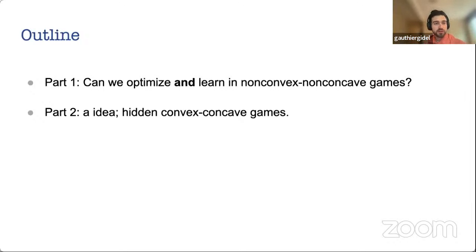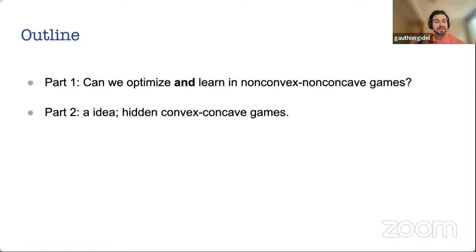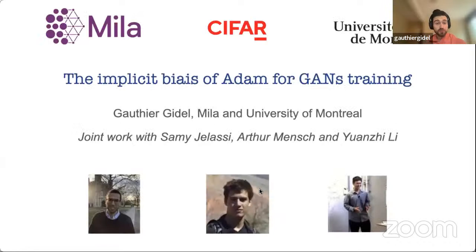The question is: do we have optimization methods that can simultaneously serve the learning task for GANs and be good at optimization? The answer to part one is, to a certain extent, no — at least with current methods. The second part will propose a new model for non-convex non-concave games that is more restricted but still corresponds to what we do in practice with neural networks: hidden convex-concave games.